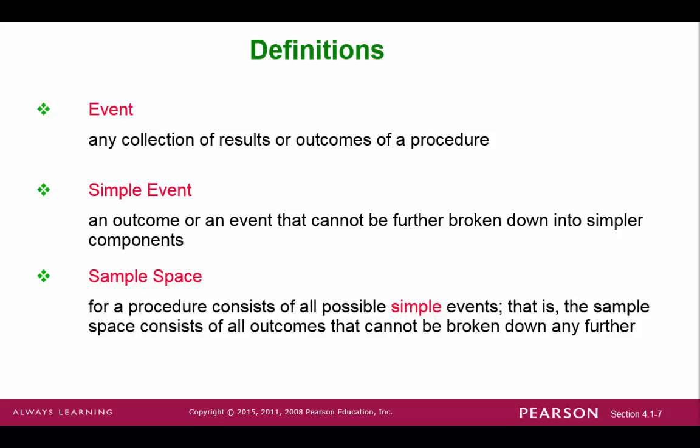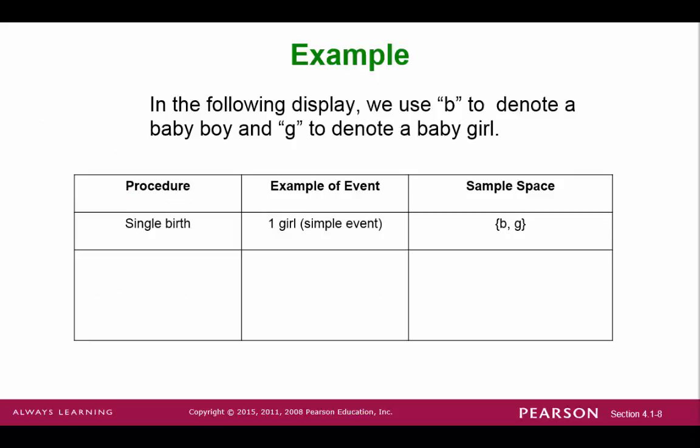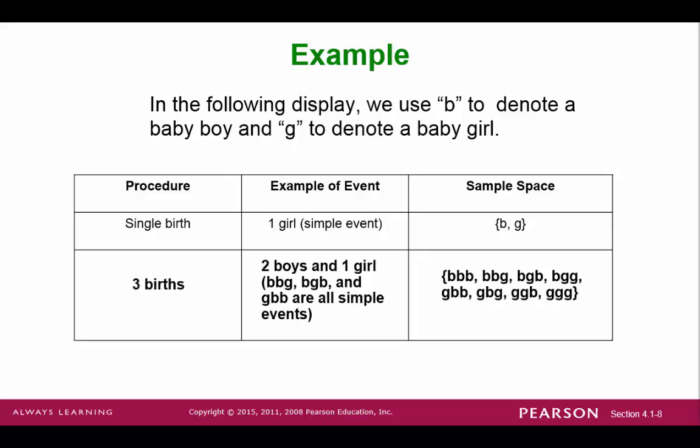A sample space is a set of all simple events in your experiment. For rolling a six-sided die, our sample space would be the numbers 1, 2, 3, 4, 5, or 6. For a single birth, you have two simple events in your sample space: boy or girl. If we change our experiment to three births, the sample space now has eight possible simple events. An example of a non-simple event would be the event that three births produced two boys and one girl. This is not simple because there are three possibilities when this could happen.